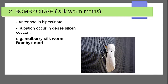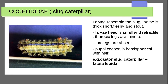Next moth family is Bombycidae — silkworm moth family. Antennae are bipectinate. Pupation occurs in a dense silken cocoon. Example: silkworm moth — Bombyx mori.